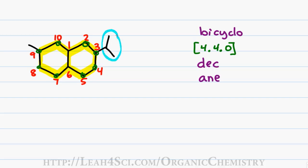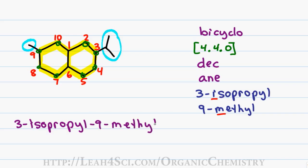And last we'll tackle the substituents. On carbon three we have an isopropyl group giving me three isopropyl. On carbon nine we have a methyl giving me nine methyl. Putting them in alphabetical order, we look at the M compared to the I. Isopropyl is one of those exceptions where we don't look at the P, we actually look at the I. Since I comes before M, we get a final name of 3-isopropyl-9-methyl-bicyclo[4.4.0]decane.